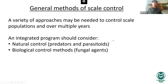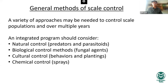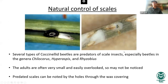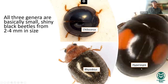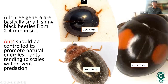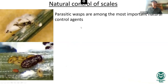A scale management program should consider natural controls, biological controls, cultural controls, and chemical controls. Natural controls include a number of very small coccinellid beetles — two to four millimeters — that are easy to overlook. Predated scales can be detected through small holes in the test where beetles feed through to eat eggs and sometimes the adult. Prior to initiating chemical controls, it's important to look for these natural controls. Ants, as mentioned earlier, may need to be controlled because they will prevent natural enemies from feeding on the scales and can be a secondary pest themselves.